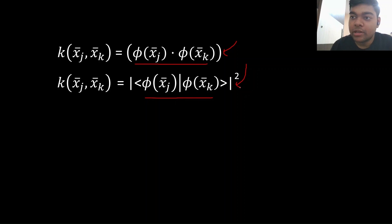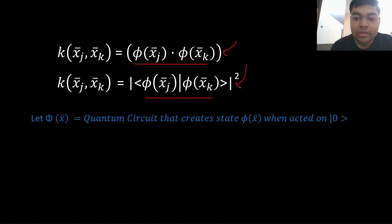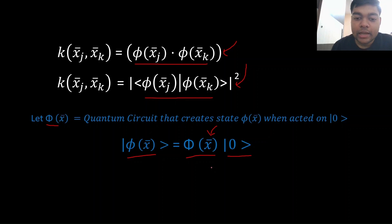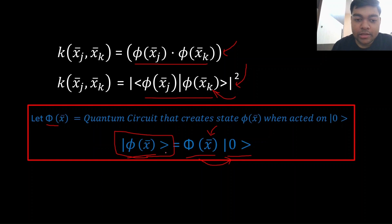Remember, we need a quantum circuit. The quantum SVM had two parts — kernel trick and quantum computer — and we have utilized the kernel trick part. Now the quantum circuit part comes. We need this state phi. For notation, capital Phi refers to the quantum circuit, and small phi refers to the quantum state. What we will do is: we have an initial state |0⟩, we have a corresponding quantum circuit which takes the input data vector x, and when executed on |0⟩ it produces state phi. And that's what we need.